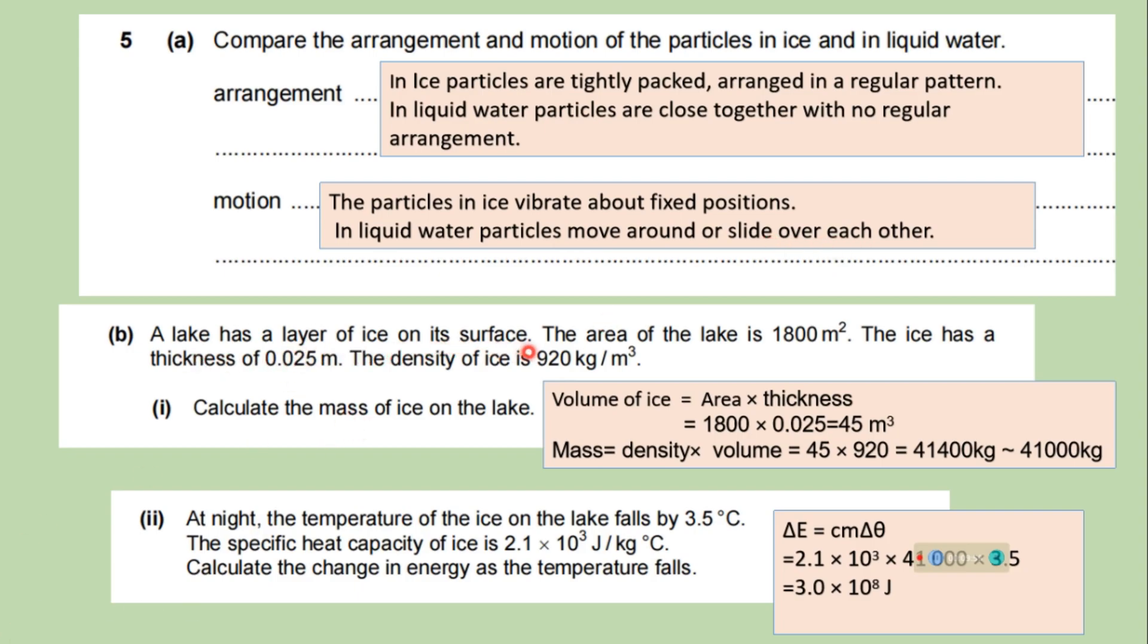A lake has a layer of ice on its surface. The area of the lake is given. The ice has a thickness of 0.025 meters. The density of ice is given. Calculate the mass of ice on the lake. So volume of ice is equal to area multiplied by thickness. Since a lake has a layer of ice, so the area of lake means the area of ice. So in order to get the volume of ice, multiply this area by the thickness of the ice. The volume of ice is 45 meter cube. And we know that density is mass divided by volume. We can rearrange and we can calculate mass. Mass is equal to density multiplied by volume. So it is approximately 41,000 kilograms.